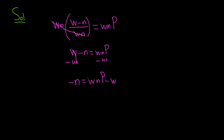Now what we can do is factor out a W from the right-hand side. So this is negative N equals — let's go ahead and pull out that W — so W times, parentheses, NP minus 1. We can check this by multiplying: W times NP is WNP, and then W times negative 1 is negative W.